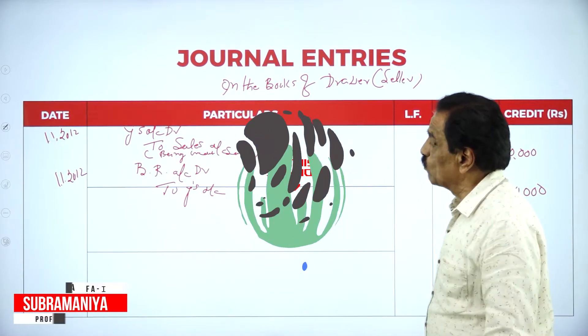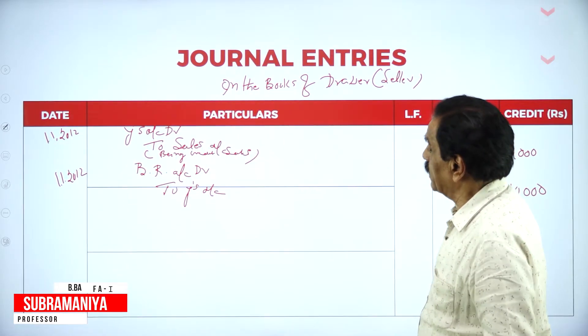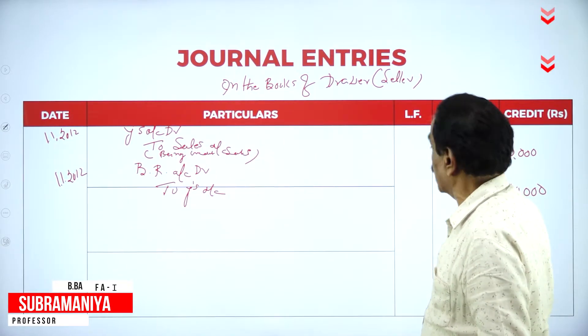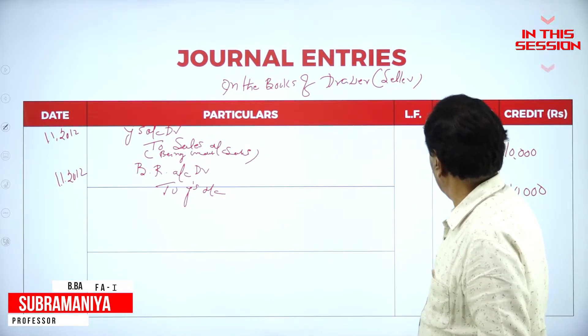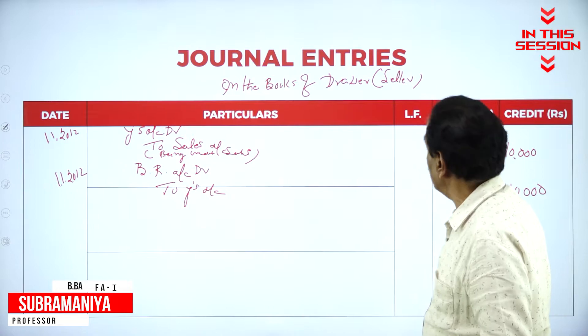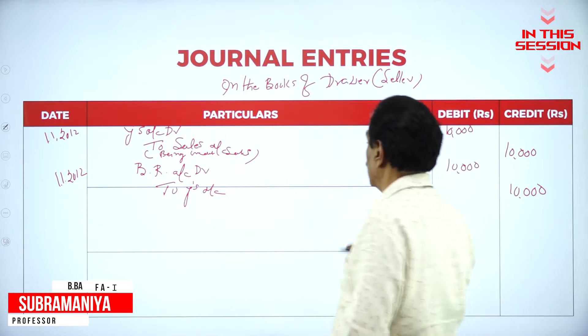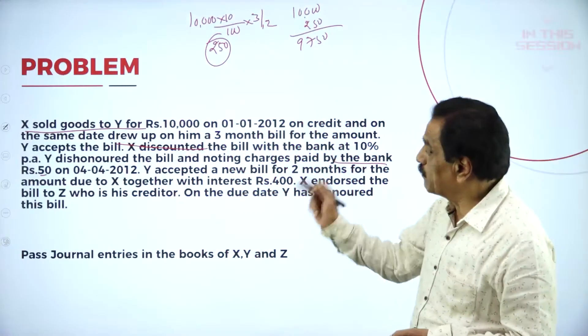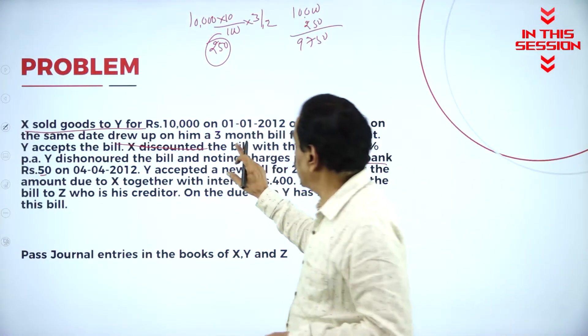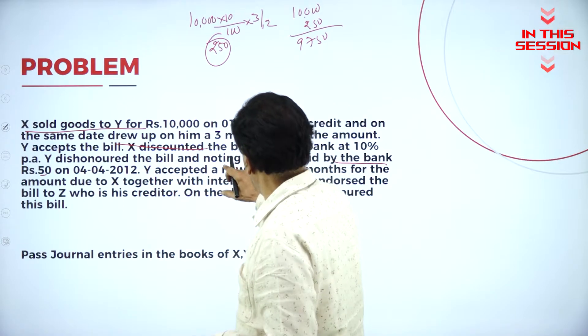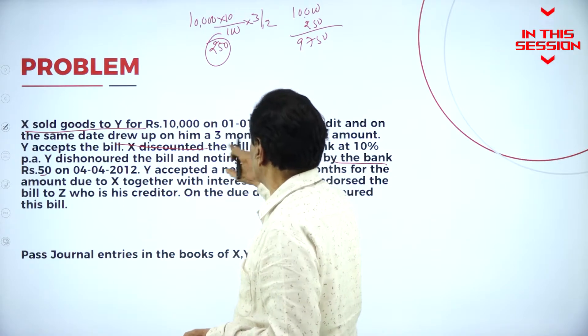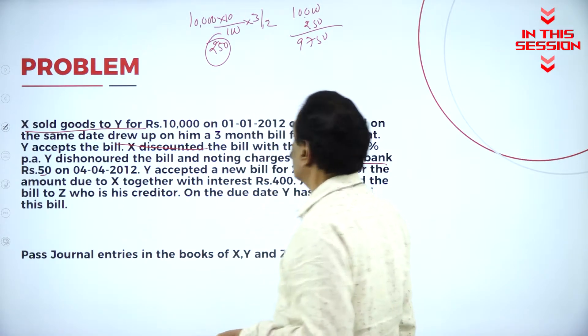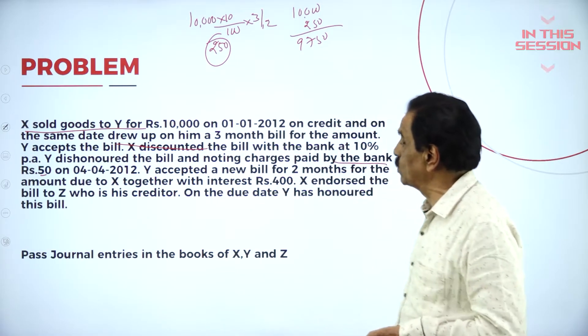For the first entry, debit the VICE account to sales account, then the bill is coming in. BR account debit, 3 months for the due date, 1-1, 3 months is 4-1, plus 3 days, so 4-4-2012.